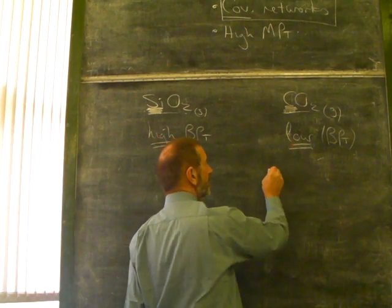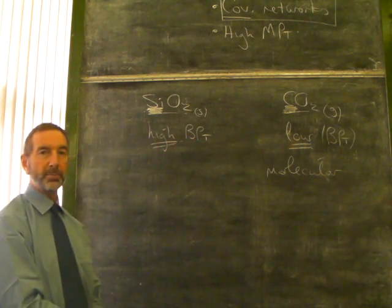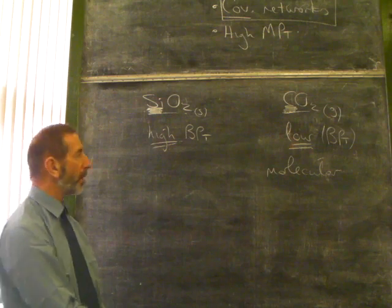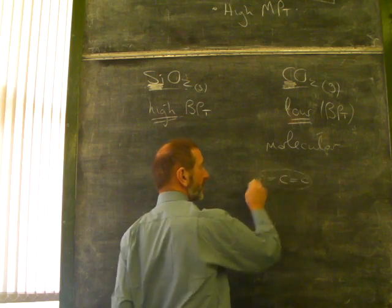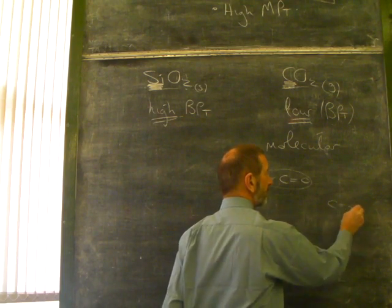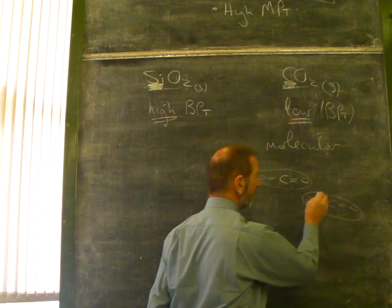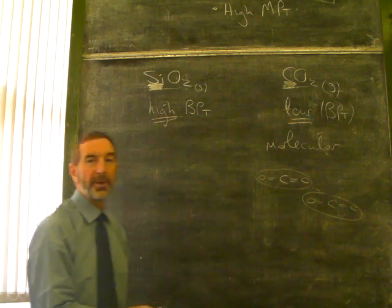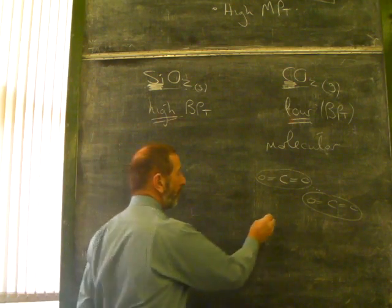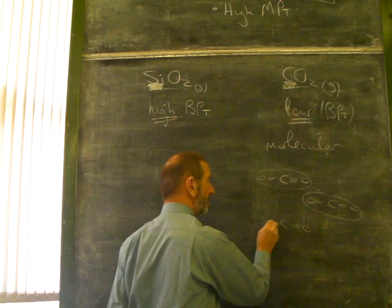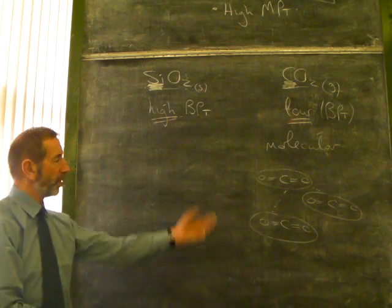Let's deal with carbon dioxide first. Carbon dioxide is molecular, made from individual, or some people call them discrete molecules. Here's a little carbon dioxide molecule. A little package. Here's another carbon dioxide molecule. The bonds inside the molecule are strong covalent bonds. But the bonds between are weak, pathetic van der Waals forces. So with weak van der Waals forces between the molecules, it's no wonder it's easy to melt and boil carbon dioxide.